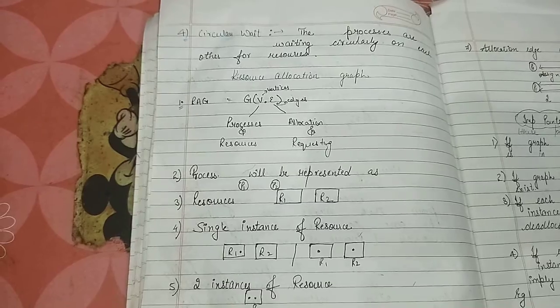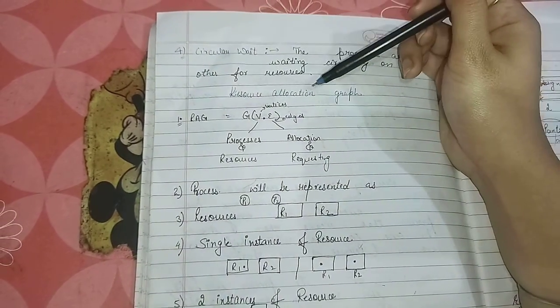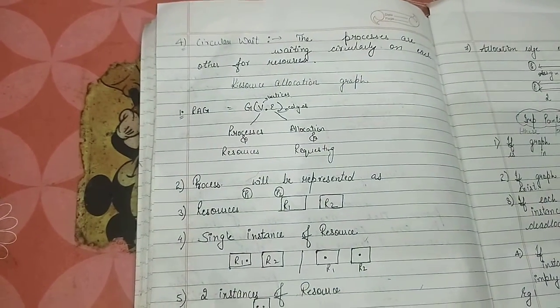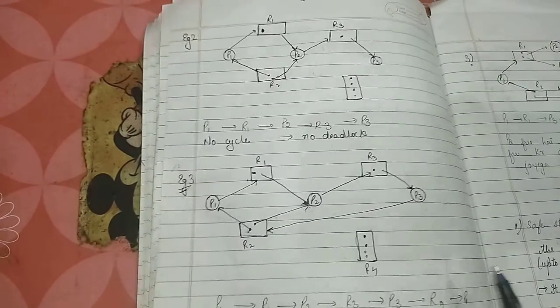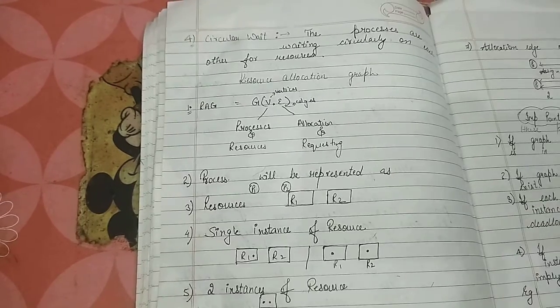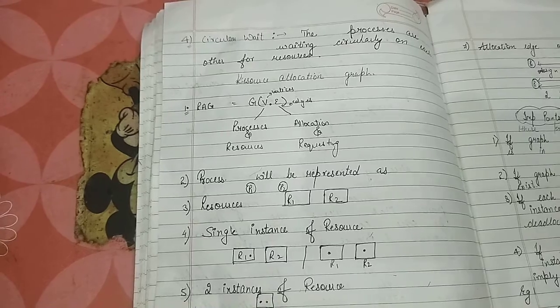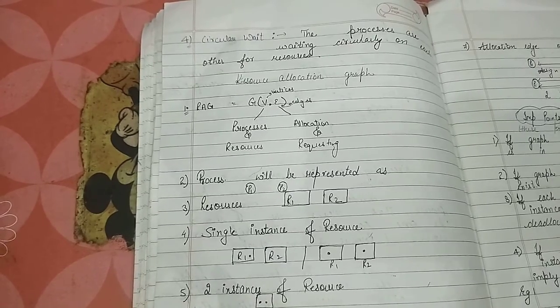So this is the resource allocation graph, which is made. Resource allocation graph, these are made. Now what are the resources, how to allocate the resource, we will tell you all these things.